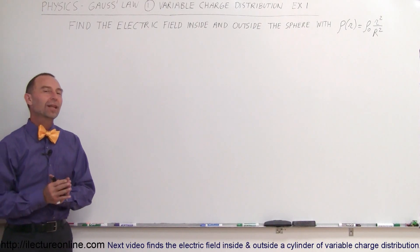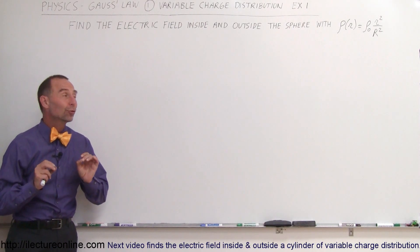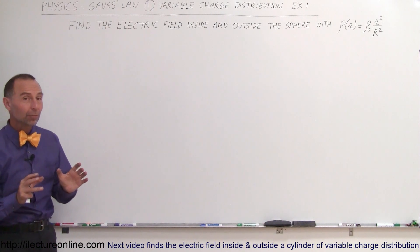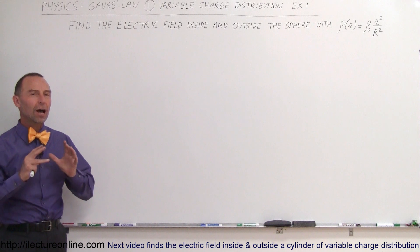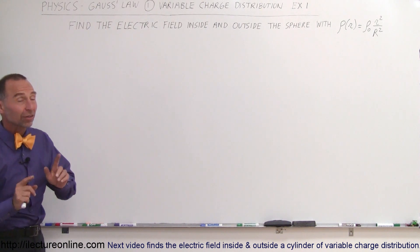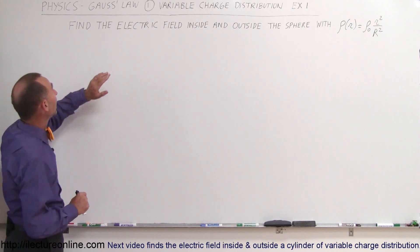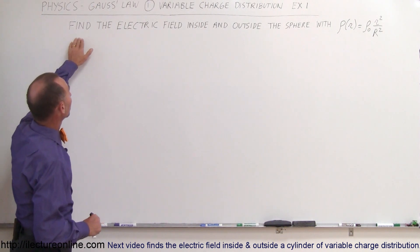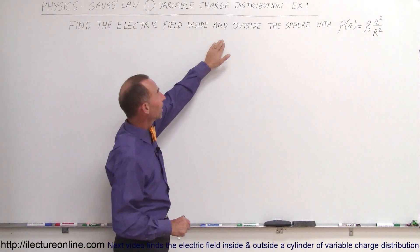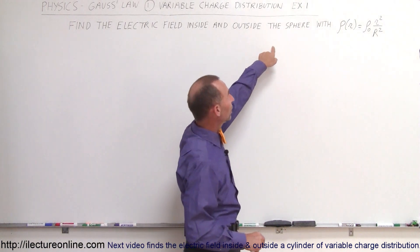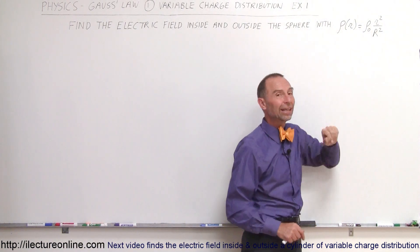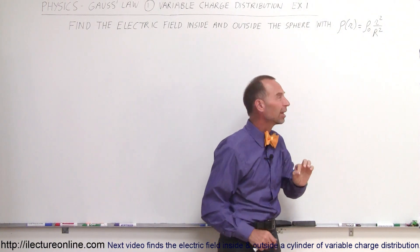Welcome to ElectronLine. Now we're going to do some Gauss's surface problems using objects with variable charge densities. Here we're trying to find the electric field inside and outside a sphere that has a charge density as such.